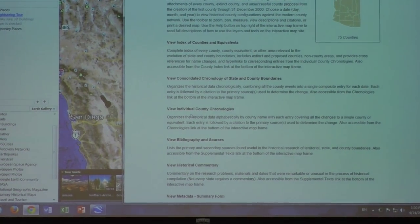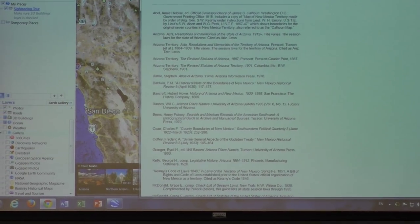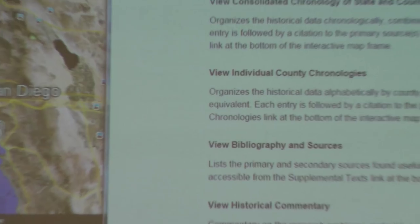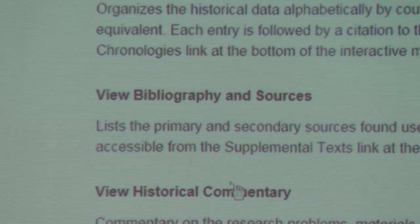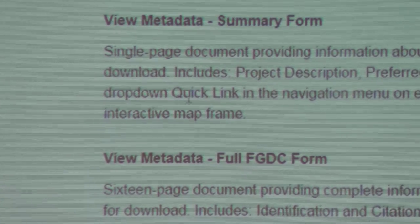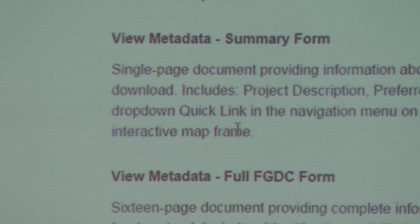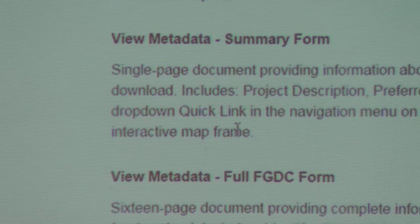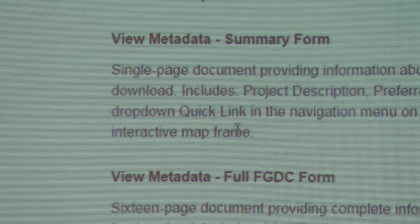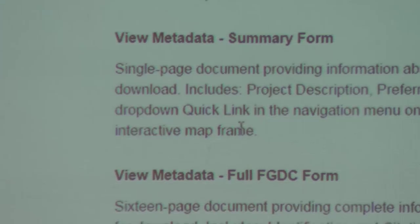The next things in the list are a bibliography and historical commentary. Down here we have what's called metadata — the information that's transferred from this program to other programs like Google Earth. When we go onto Google Earth and click on a county, it'll bring up the history of that county. That information came from the Newberry Atlas, transported by way of the program.